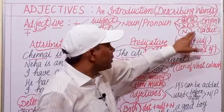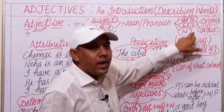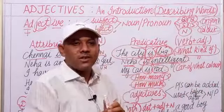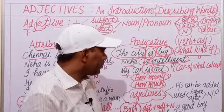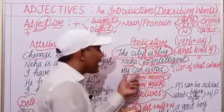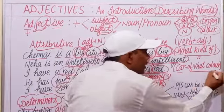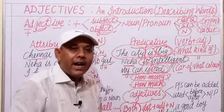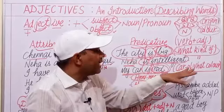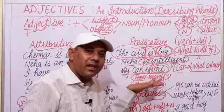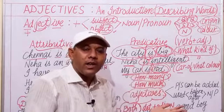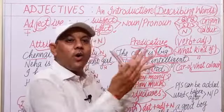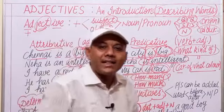Adjectives are known as describing words because they describe nouns and pronouns. For example, 'My car is red' — the adjective 'red' describes the color of the car. We can identify adjectives by asking questions such as: how many, how much, what kind of, what color, what shape, what size, or what is the origin.